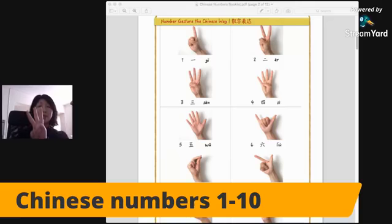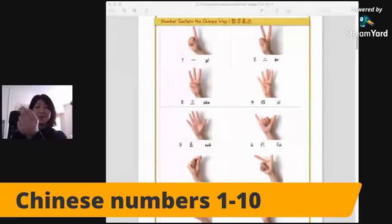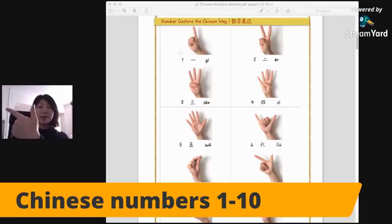Now pay attention: six, liù, we do like this - like making a phone call gesture. Seven is qī. If you are Italian you know how to do it - three fingers together. And bā is like this, like a gun. A lot of people make a mistake when they use this gesture thinking it means two. However, in Chinese it is bā, which means eight.